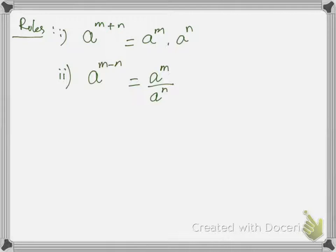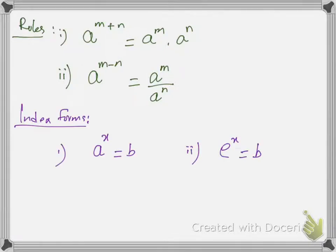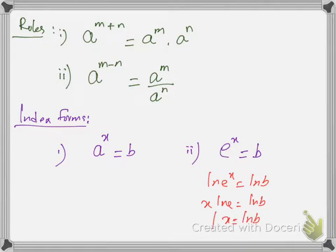Of course, we use these rules for solving Type 2 equations as well. Now let us discuss the standard index forms. There are two standard index forms: A^x = B and e^x = B. When we have e in the index form, then we use LN. By using LN on both sides, we can get the value of x. LN e^x is 1, so we can write this as x = LN B. We can use the calculator to get the value.